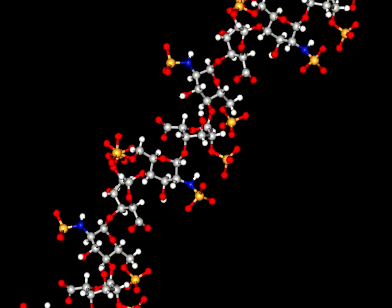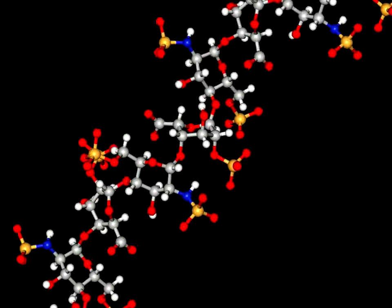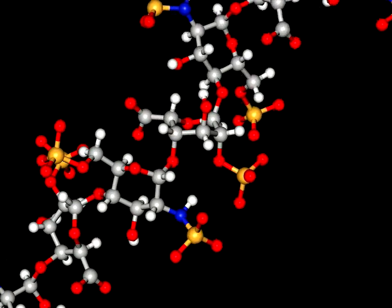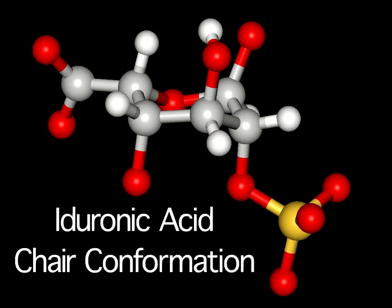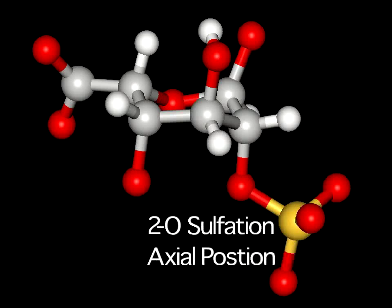This is in contrast to the next residue we will examine, the iduronic acid residue. Depending on the substitution pattern and protein interactions, this residue can be found in either of two conformations. We will explore both conformations, but the one shown here is positioned in the chair conformation.